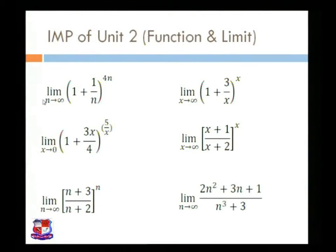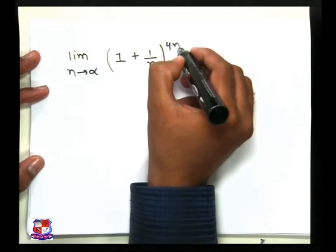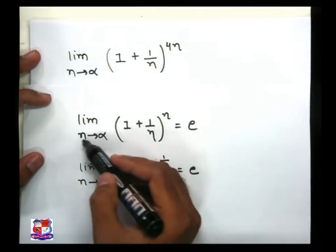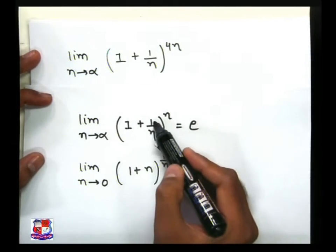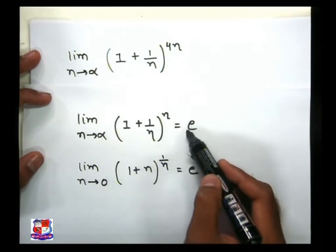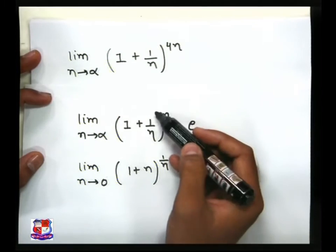The next question is: limit as n tends to infinity of (1 + 1/n)^(4n). We compare this to our base formula. Here n tends to infinity, the term 1/n matches, but the power is 4n instead of n.